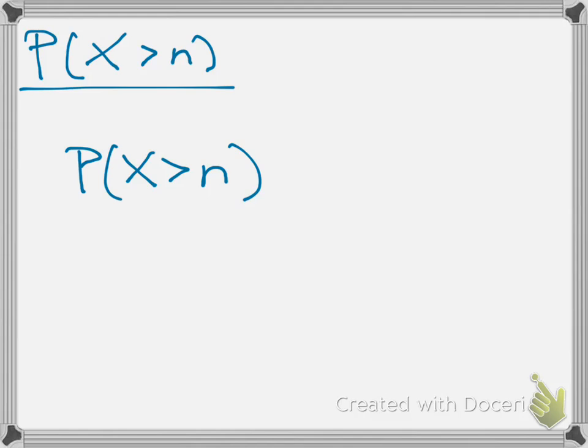In this case the probability that x is greater than n is also a pretty simple formula. It's just 1 minus p to the nth power.